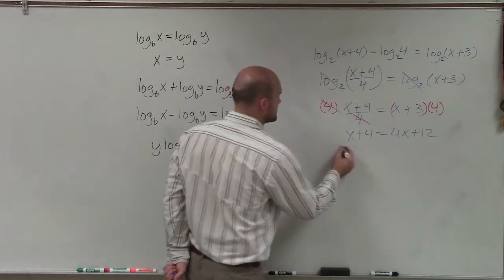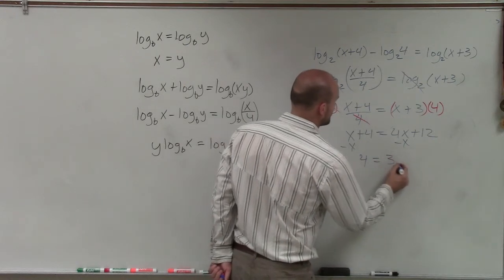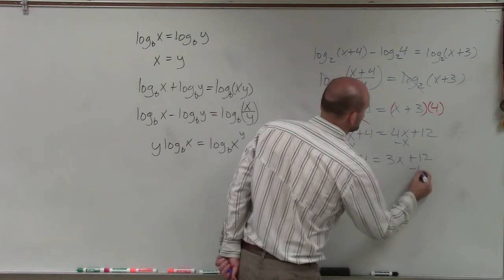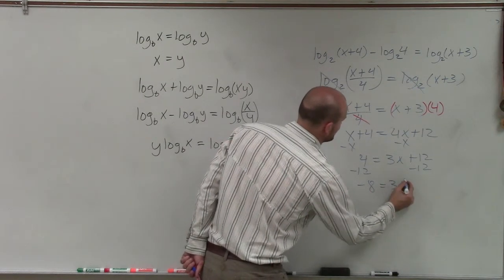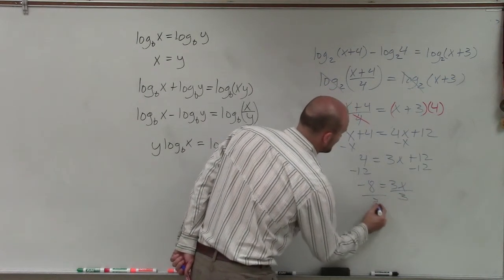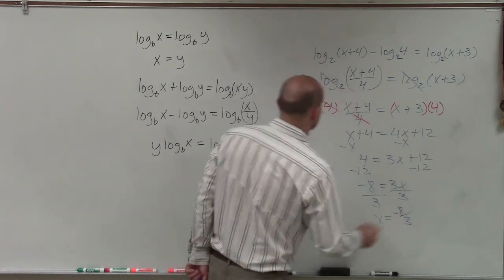So now, to solve for this, I just get my variables on the same side. So I have 4 equals 3x plus 12, subtract the 12. So I get negative 8 equals 3x, divide by 3, x equals negative 8 thirds.